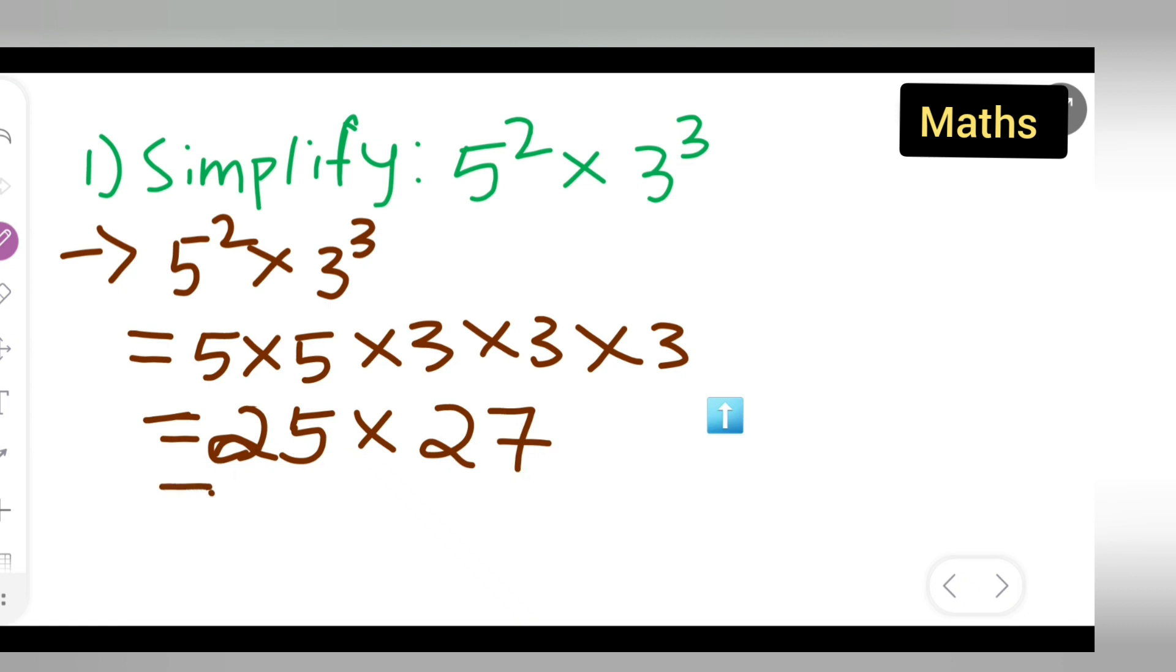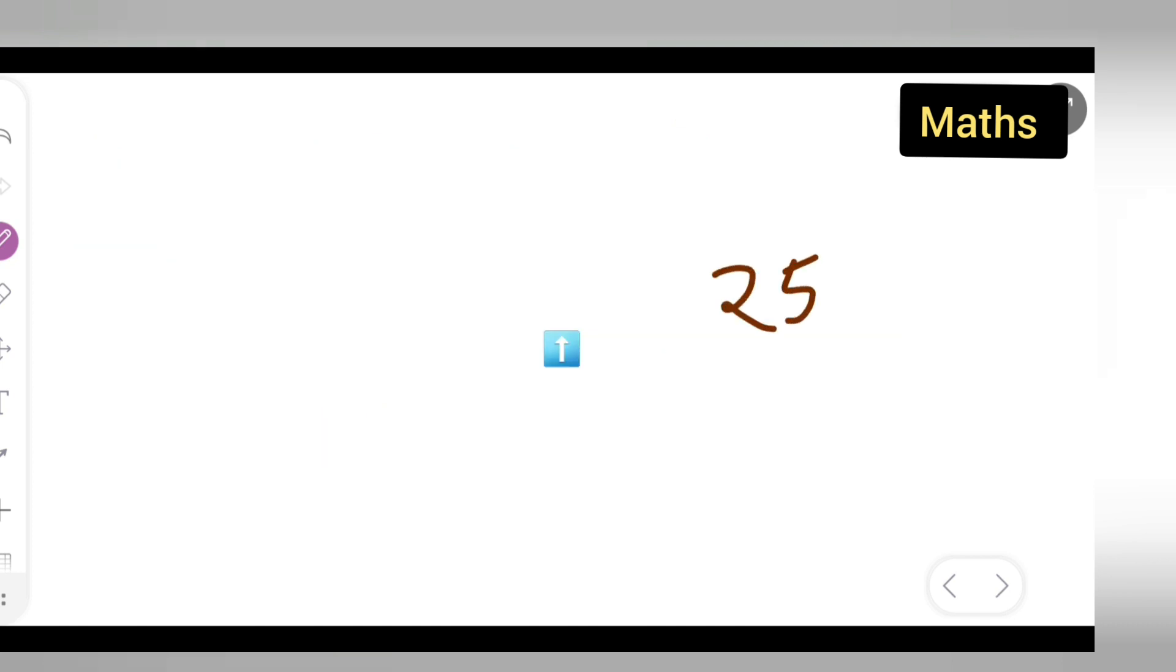Now multiply these two numbers and see what answer you're going to get. So 25 multiplied by 27. 5 sevens are 35, 5 twos are 10, 11, 12, 13.